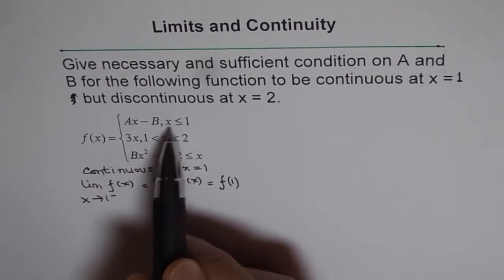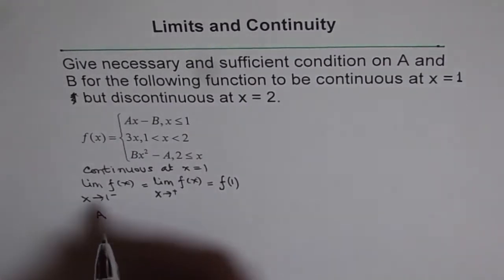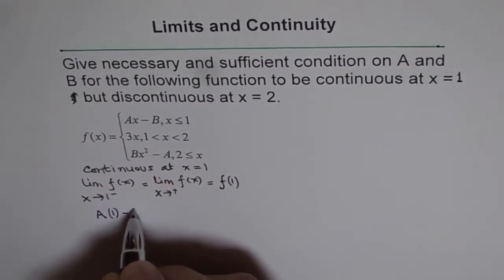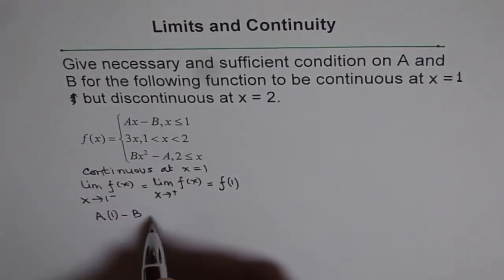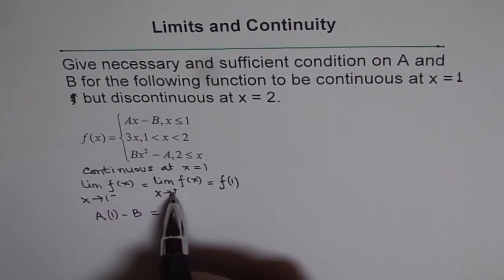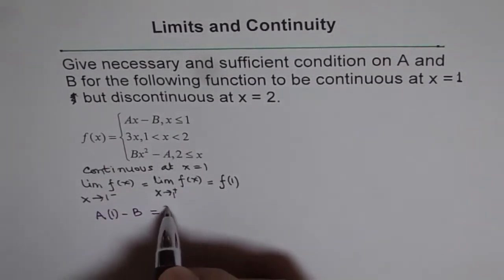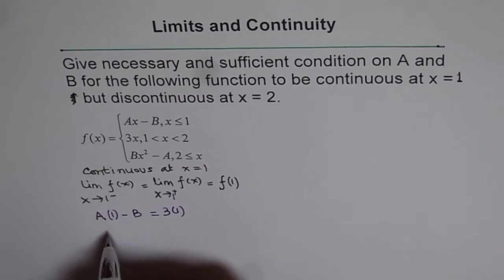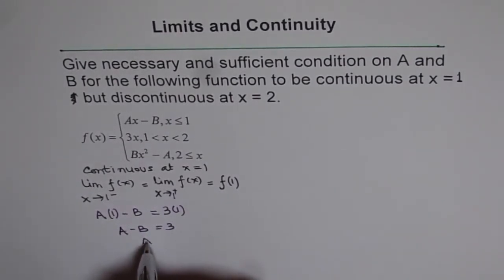So if I plug in 1 here, we get A times 1, which is A, let me write 1, minus B on this limit of the function as x approaches 1 from the negative side. And that should equal the limit when x approaches 1 from positive side, then it will be 3 times 1. Or we can write this as A minus B equals 3, or A equals 3 plus B.